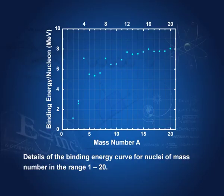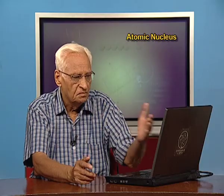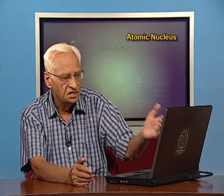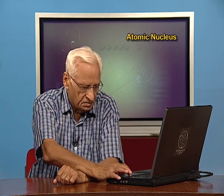In a zoomed graph for mass numbers up to 20, you can see peaks at mass numbers 4, 8, 12, 16, and 20. This means mass numbers divisible by 4 are more stable than neighboring mass numbers. Mass number 8 is more stable than its neighbors, and so on. We shall discuss this further later.